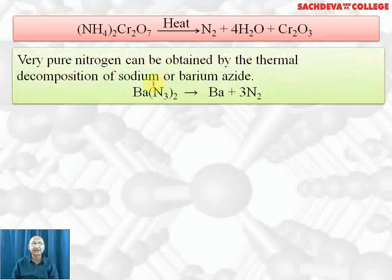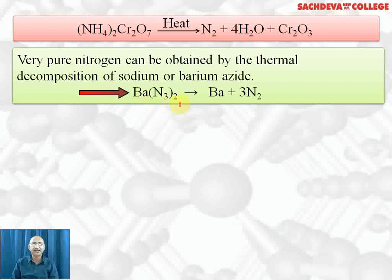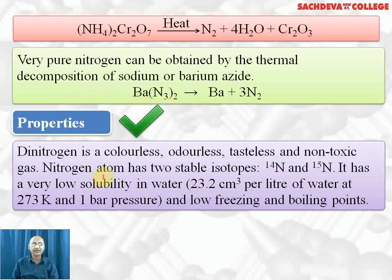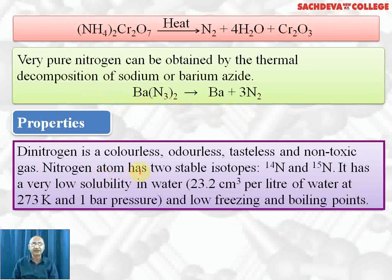For very pure nitrogen, we can get it by heating sodium azide or barium azide. Barium azide, Ba(N₃)₂, on heating gives barium plus 3 N₂. Sodium azide, NaN₃, on heating gives Na plus N₂.